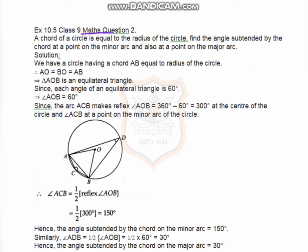Question number 2. A chord of a circle is equal to the radius of the circle. Find the angle subtended by the chord at a point on the minor arc and also at a point on the major arc. Here, OA, OB, and AB are the chord which equals the radius of the circle.